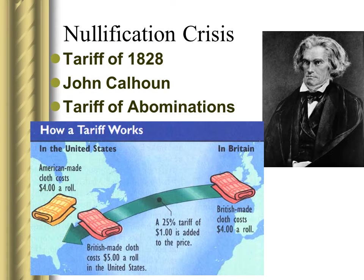Now that we have our president, let's talk about some stuff that goes down while he is president. The textbook is going to jump around a lot here, but the topics aren't super complicated. The first thing that goes down is the nullification crisis. We've talked about nullification before — with the Virginia and Kentucky resolutions and the compact theory, where Jefferson was saying that the Alien and Sedition Acts need to be nullified. So you already know what nullification is. But now there's going to be another crisis — this is the big one that the AP board loves to ask you about.